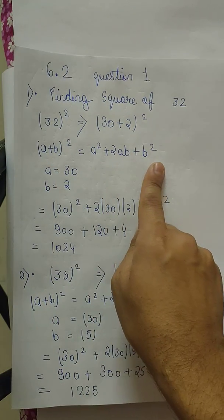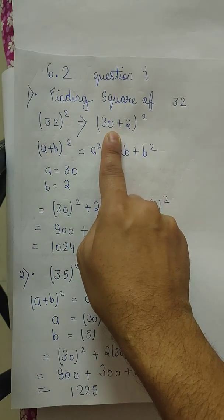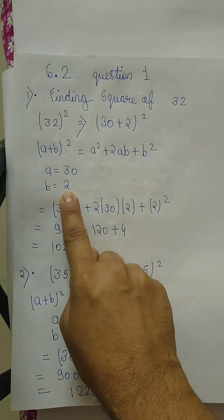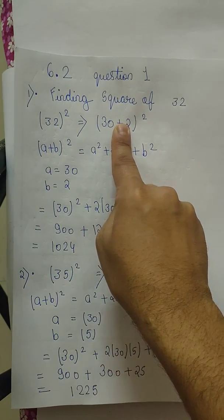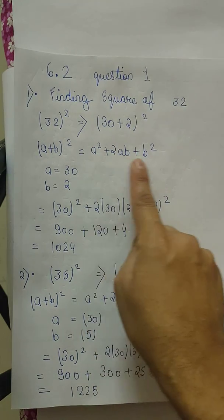It can be written as (a+b)², that is a² + 2ab + b². We will compare this with (a+b)². So the value of a is 30 and the value of b is 2. We are getting a and b values from this, so we will put the values of a and b into the formula.